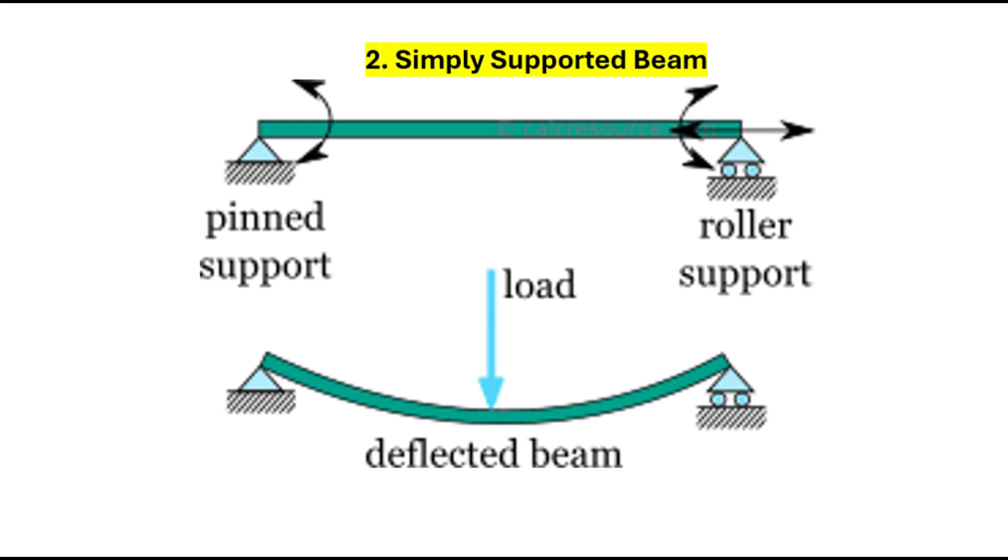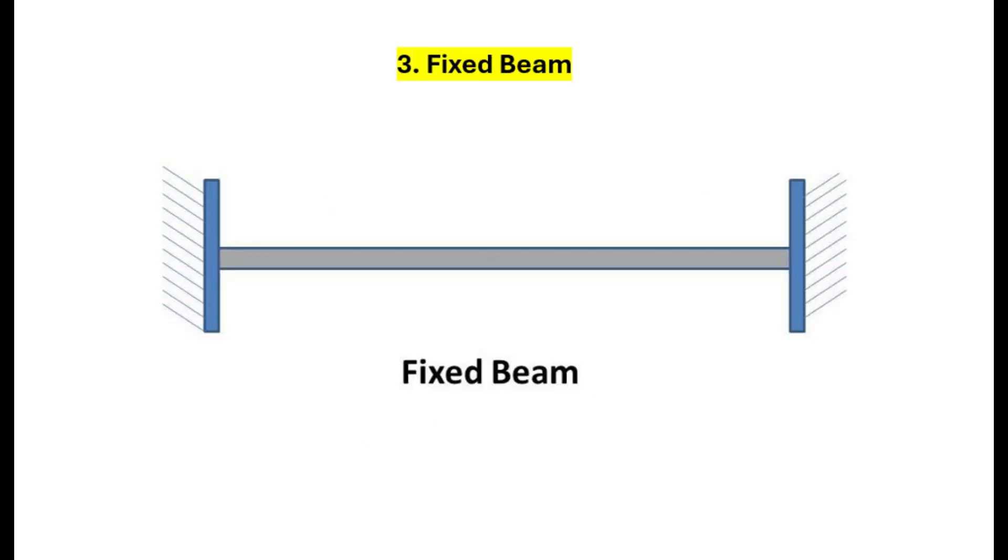3. Fixed beam. Both ends of this beam are fixed, so it can't rotate or move. It's very stable and commonly used in heavy-duty constructions like dams.